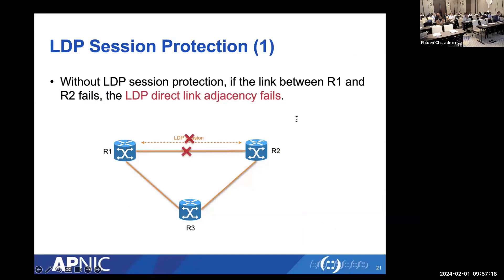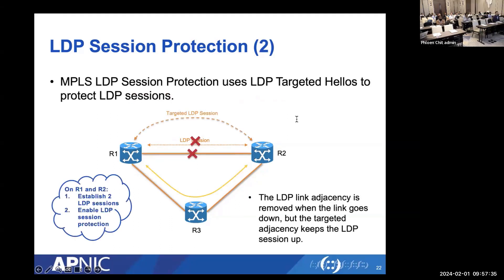LDP Session Protection is a feature that maintains the LDP session when a direct point-to-point link goes down. Using targeted (multi-hop) Hello messages, the router can keep the LDP session active even after the direct link adjacency is removed. This prevents labels from being removed from the LIB due to a link flap — you don't want your LDP session going down and all labels disappearing just because of a temporary link flap.